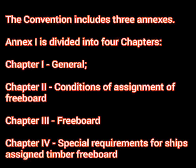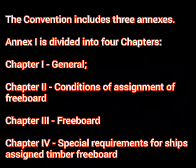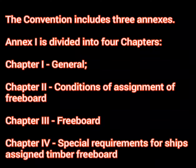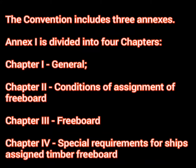Now let's talk about the 4 chapters. The first chapter of Annex 1 is General, which is usual for most conventions. The second chapter is Conditions of Assignment of Freeboard, which is what this whole convention is based on. The load line marks calculate how much freeboard will be safe based on the number of subdivisions the ship has — meaning the ship's capacity to sustain damage and its intact stability. Chapter 3 talks about Freeboard again, and finally the 4th chapter covers special requirements for ships assigned with Timber Freeboard.